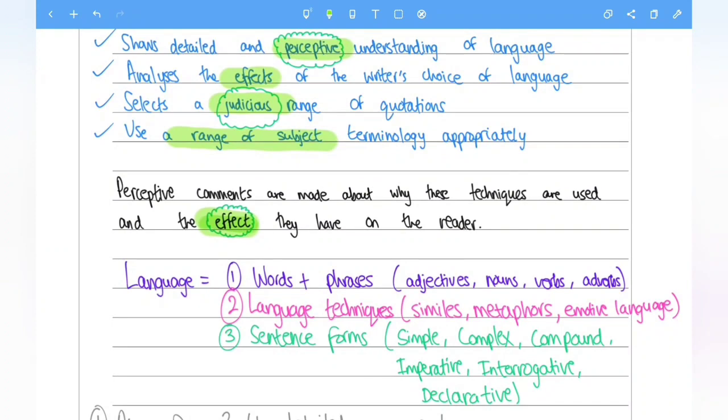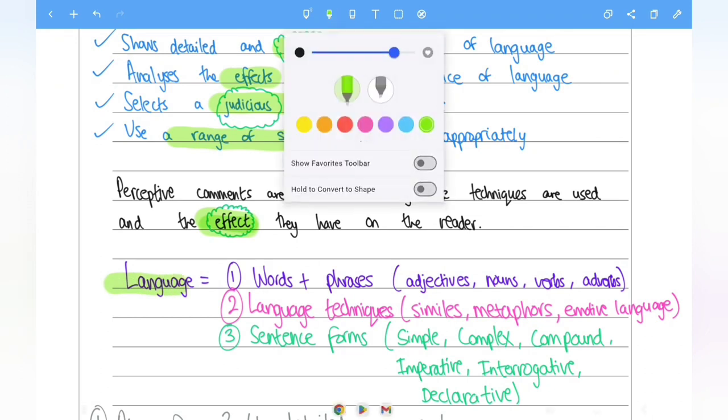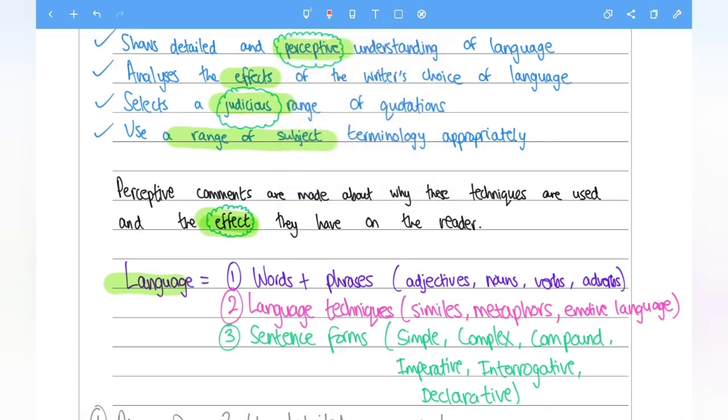Now just moving on to the next part here. Language. As you are expected to analyse language, what is expected for you to cover here? I've divided this into three categories to simplify it for you all. This includes the following. So number one is the words and phrases.